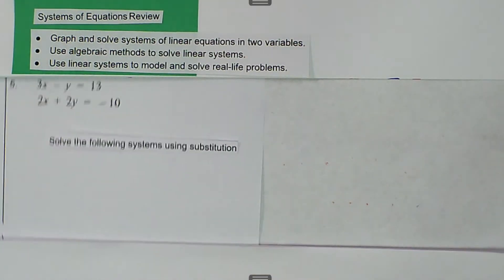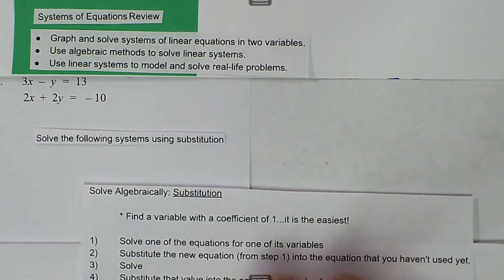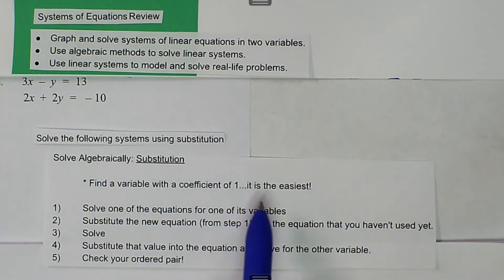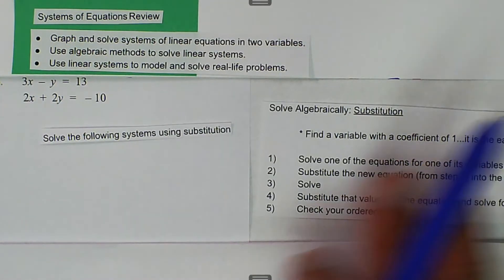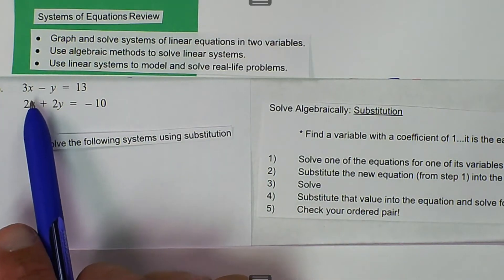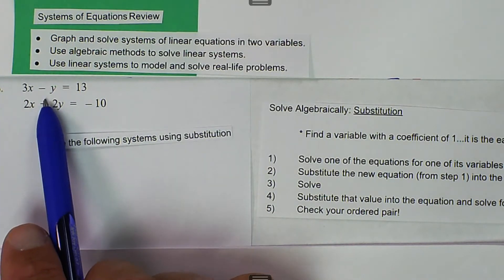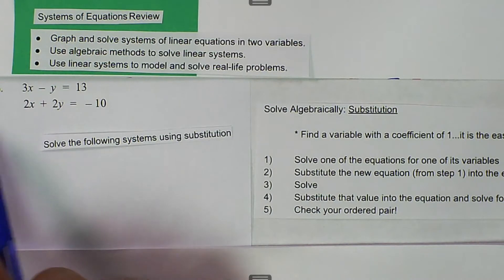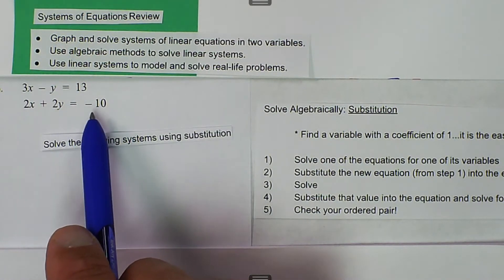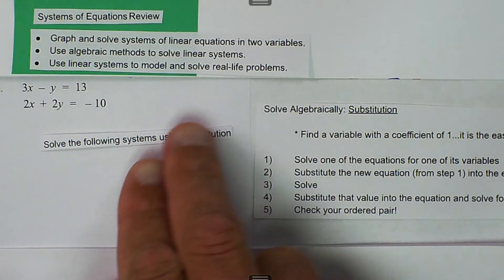When we're looking to solve here, we want to try our best to find a variable with a coefficient of 1. It's easiest to solve. If we look at these two equations, we have 3x minus y equals 13, which has a 3 and a negative 1, so neither one is 1. And then we have 2x plus 2y equals negative 10. In this case, we don't have one that's necessarily that easy for solving.